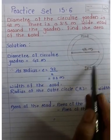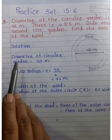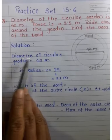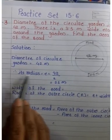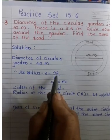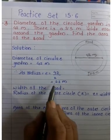In this solution, we write: diameter of the circular garden equals 42 meters. Then its radius, half of the diameter, is 42 divided by 2, which equals 21 meters.